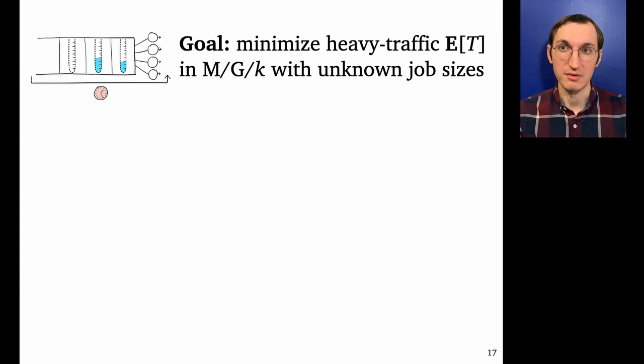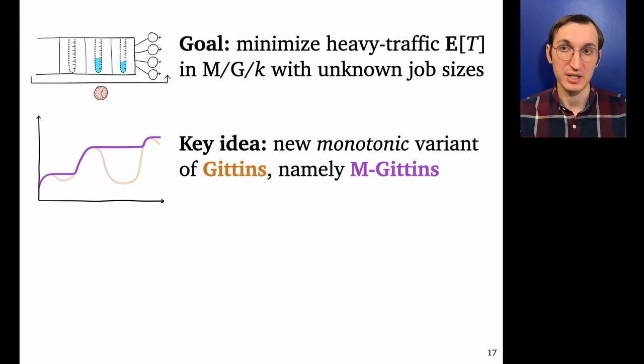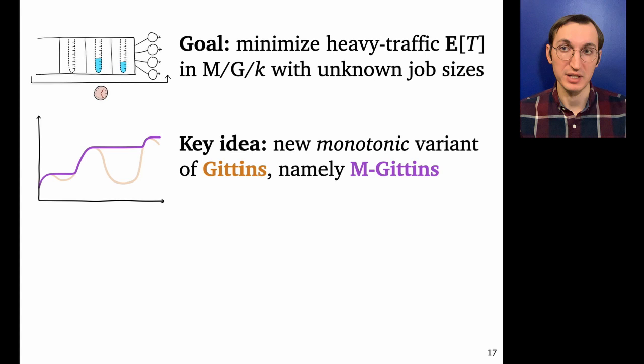Okay, great. So to conclude, today we talked about how to schedule to minimize mean response time in the heavy traffic M/G/k when we've got unknown job sizes. And our key idea was to adapt the single server optimal policy, Gittins, with a new monotonic variant of it, which we call M-Gittins, and we were able to show that this monotonic variant when applied to k servers, M-Gittins-k, we were able to show that that was asymptotically optimal for mean response time in the heavy traffic limit as the load approaches one.